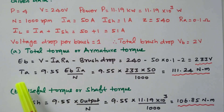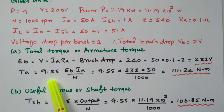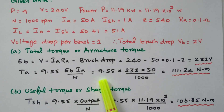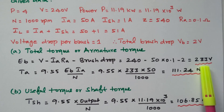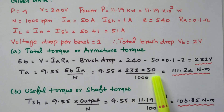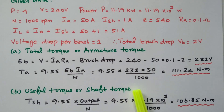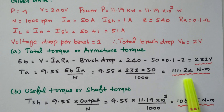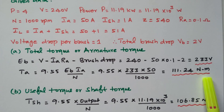Using the back EMF, we calculate the armature torque: TA = 9.55 × 233 × 50 / 1000 = 111.24 N·m. The unit for torque is newton meter.